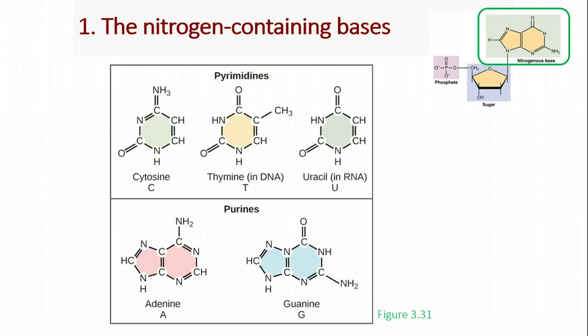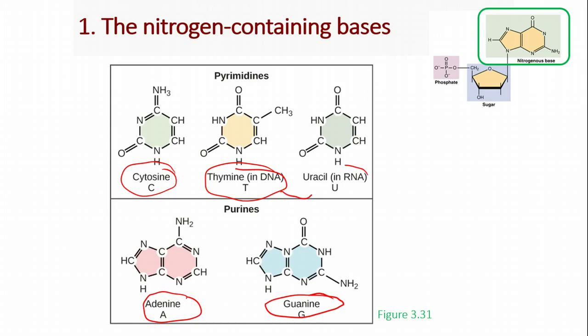Nitrogen-containing bases are the codes that DNA uses to specify what a protein should look like. We have five of them — four are used in DNA and four in RNA. In DNA, you have cytosine, thymine, adenine, and guanine. In RNA, you replace thymine with uracil.